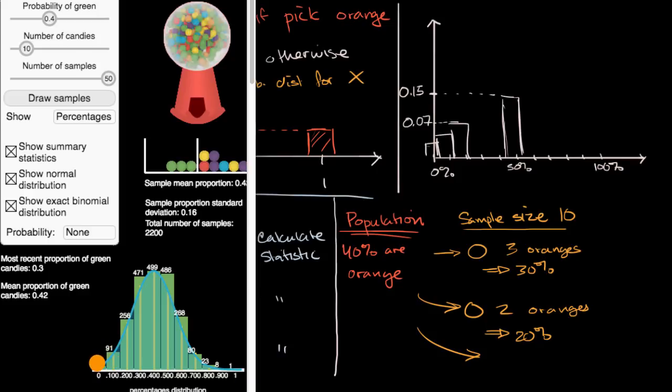And we could convert any of these numbers, 17, 91, 256, we could turn these into percentages by just dividing by the number of samples. But this is fun. We could just keep going and making this larger and larger. I encourage you to play with this. I'll provide a link for it in the description on this video and on Khan Academy.